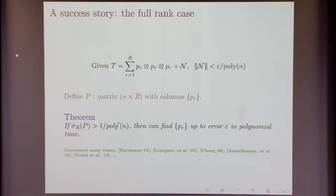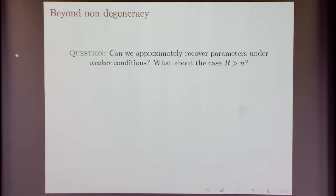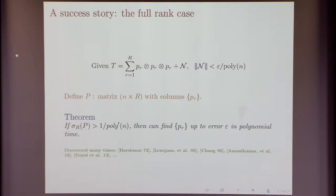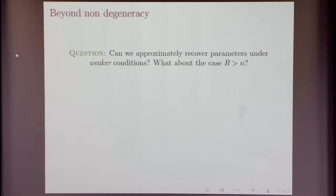Having stated all this, I should say this is an old result, discovered many times — I think the earliest known result is due to Harshman. The result I stated is quite strong: if you have R smaller than n and you have this non-degeneracy property, then you can efficiently recover the decomposition. But it requires the strong non-degeneracy property. The question is: can you hope to recover parameters even under weaker conditions? In particular, if the number of parameters to recover is more than n, the dimension, can you still recover them?